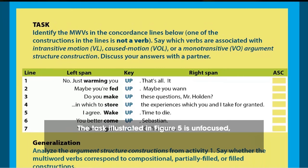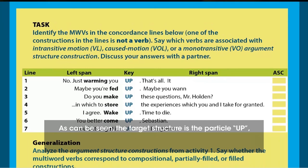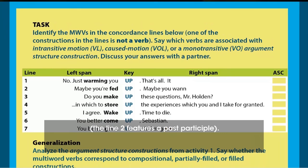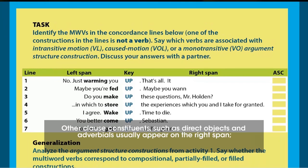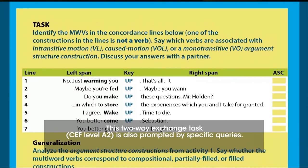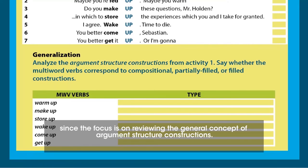The text illustrated in Figure 5 is unfocused — that is, it may predispose learners to choose from a range of forms, but it is not designed with the use of a specific form in mind. The target structure is the particle 'up', placed vertically and centered, with its associated verbs organized in the left span. Line 2 features a past participle. Other close constituents, such as direct objects and adverbials, usually appear in the right span. In the reflection section, learners exchange their conclusions on key aspects of the construction studied. This exchange text, CEF level A2, is also prompted by specific queries. This particular task does not include a pre-task section, since the focus is on reviewing the general concept of argument structure constructions.